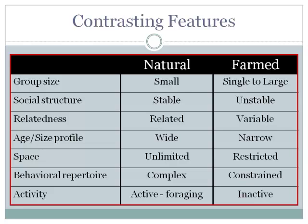Comparing the natural situation with the farm situation: naturally we have small groups, stable social structure, related animals, a wide age and size profile, fairly unlimited space, a complex environment, and a complex behavioral repertoire. Animals spend a lot of time active and foraging, especially at dawn and dusk. On the farm, we may have very large groups, unstable social structure, and variable relatedness — particularly in dynamic systems where sows are moved in and out.